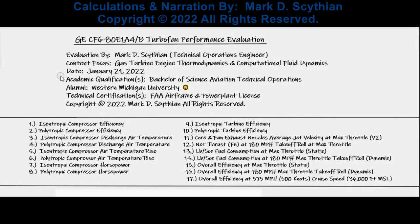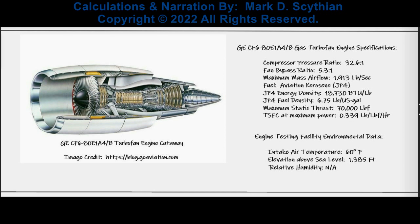Welcome to this General Electric CF6 80E1 A4-V Turbofan Performance Evaluation. My name is Mark Scythian. The date today is January 21st, 2022. This performance evaluation is predicated on evaluation parameters 1 through 17. The latest version of the CF6 gas turbofan jet engine is the 80E1 A4-V, with significantly higher performing specifications as listed on the right, including the engine testing facility environmental data used in calculating these evaluation metrics.